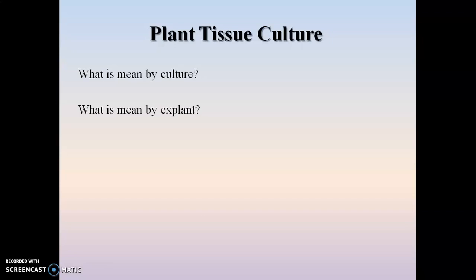The second term is explant. An explant is nothing but a particular or specific part of the plant which is used for the culturing technique. We can use either a single cell, a tissue, or a specific organ of the plant. Protoplasts — cells from which the cell wall is removed — are also used as explants for the culturing technique.